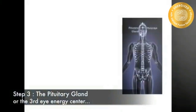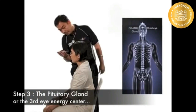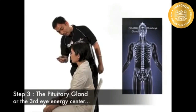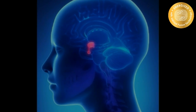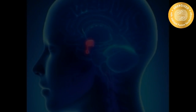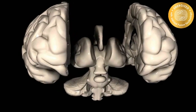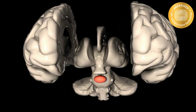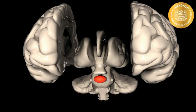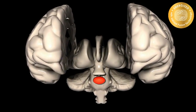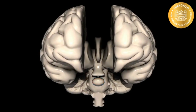Step 3: The pituitary gland, or the third eye energy center. The pituitary gland, when balanced, will improve weight loss and secretes human growth hormones like HGH. It acts indirectly on cartilage and bone growth, causes the adrenals to release cortisol, and is influenced by stress, which is ACTH.